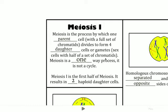In meiosis, we start out with a parent cell and we end up with four daughter cells. Remember, in mitosis you had two cells produced — now you're going to have four cells produced. Those four cells are going to be sex cells, so either egg or sperm. In the first half of meiosis, we're going to produce two daughter cells, and those daughter cells will be haploid — meaning they'll have half a set of chromosomes rather than a full set.